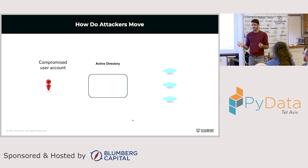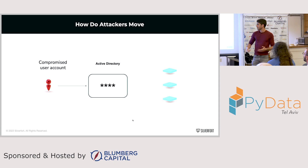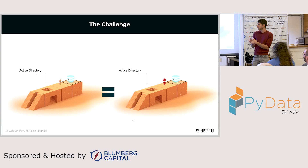In every organization you have something called an identity provider - Microsoft's technology is called Active Directory. In order to log into your computer or move to another computer, you need to provide credentials to this Active Directory. Credentials might be a password or a fingerprint. If the Active Directory validates you, you can advance to the computer you want to reach. And if you're an attacker, you can also infect machines with malware.